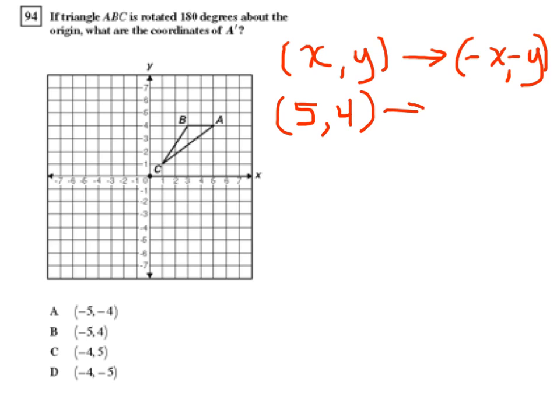Which would then get mapped to negative 5, comma negative 4 through 180 degree rotation. Which would correspond with answer A.